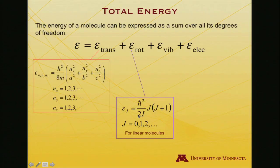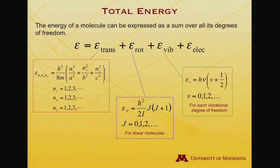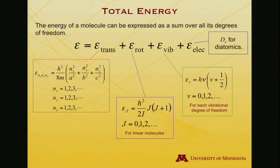For translation in a three-dimensional box, quantum numbers and box side lengths plus mass are required. Rotational energy for linear molecules is given by the standard rotational energy formula. Vibrations are determined from the quantum mechanical harmonic oscillator expression, one energy level associated with each vibrational mode. Electronic energy has a simple form for the hydrogen atom; for diatomics, there's a number dE we can associate with it, otherwise it's typically something looked up.